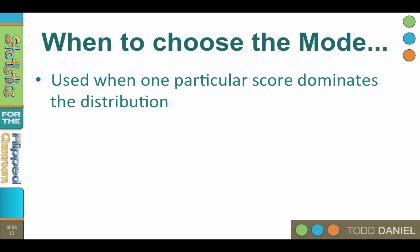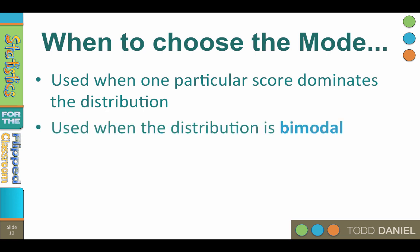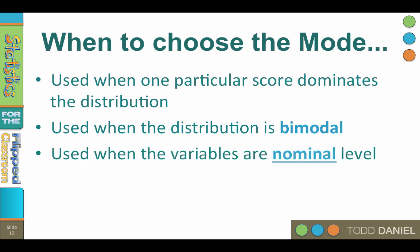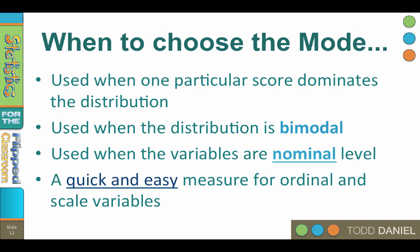You should report the mode when there is one particular score that dominates the distribution. This occurs with nominal level data, such as when we want to know the most popular category or the most commonly selected product. Report the mode when the distribution is bimodal and the mean or median would be non-representative. The mode is the central tendency measure of choice when variables are measured at the nominal level, which will be analyzed using a non-parametric test. Finally, the mode can be a quick and easy way to get a sense of your ordinal or scale variables when you are first approaching a data set.